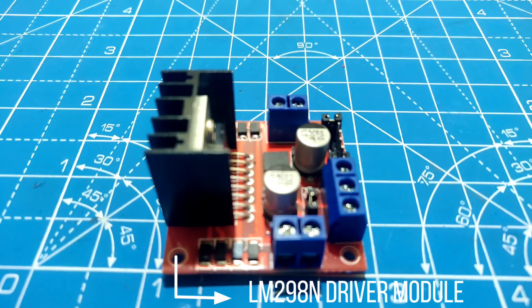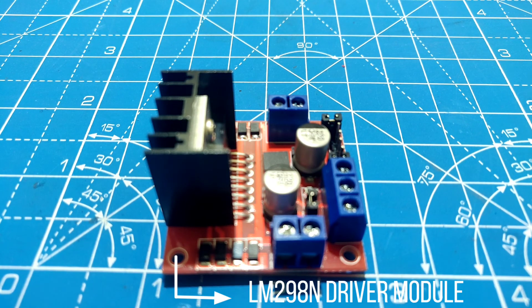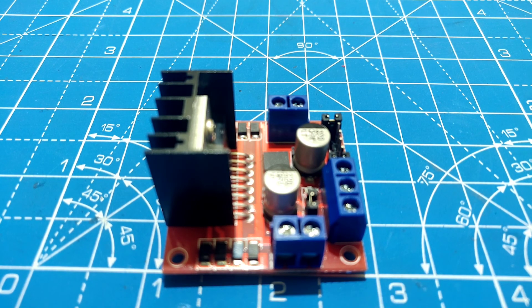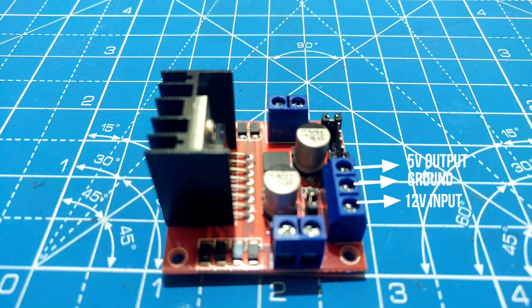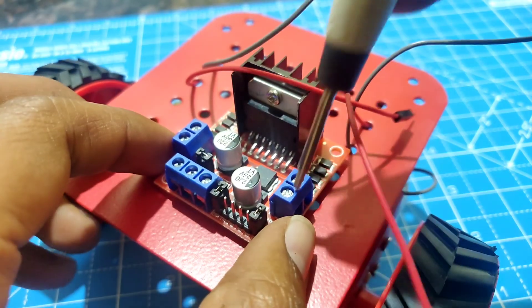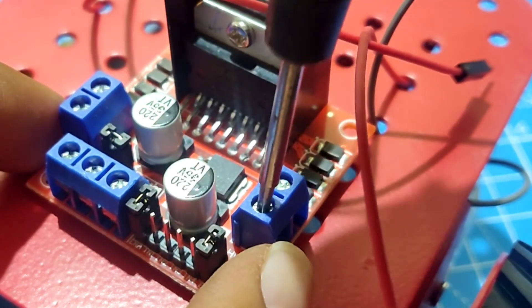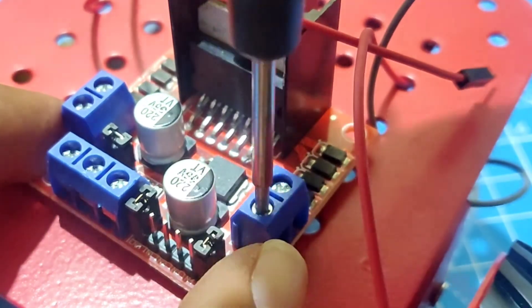This is an LM298N motor driver module which is used to drive DC and stepper motor. As you can see here the output pins and these are the voltage pins, and these are the data pins which we are going to connect with Arduino. Connect the motor wires to these output pins.